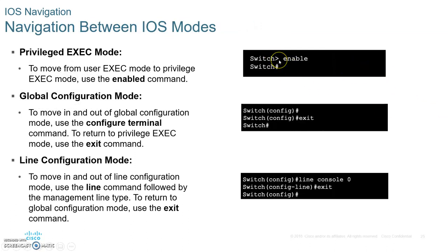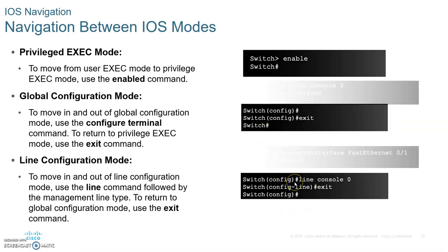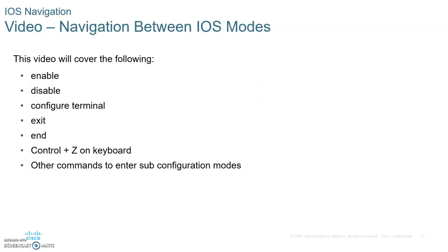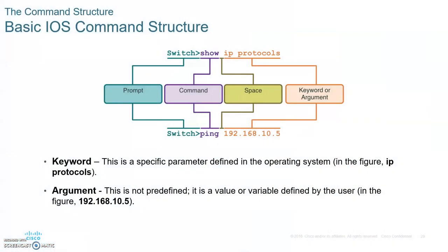You type 'enable' to go from User Mode to Privileged Mode. Type 'exit' to get out from one mode to the other. If you want to set a password for the console line, you type 'line console.' If you want to configure an interface, you type 'interface' followed by the name of the interface and the port number.